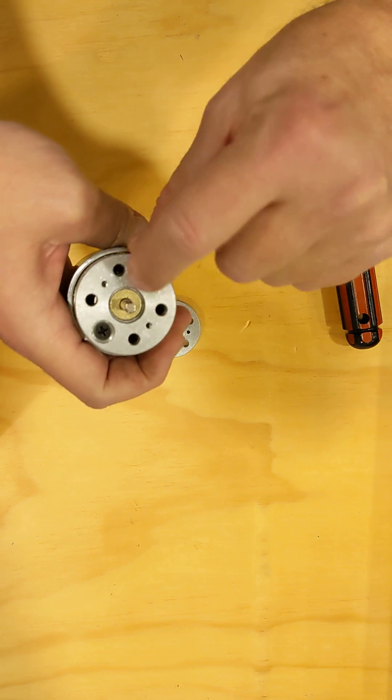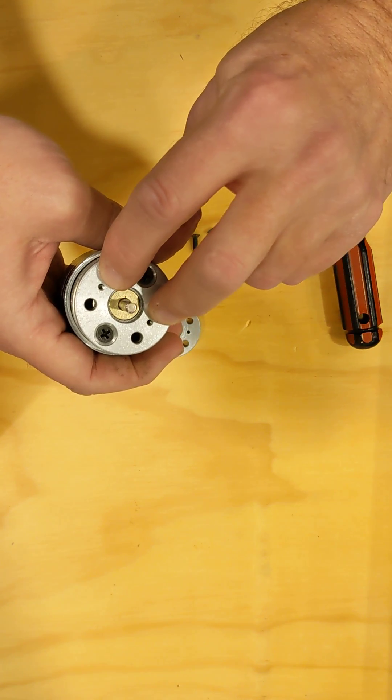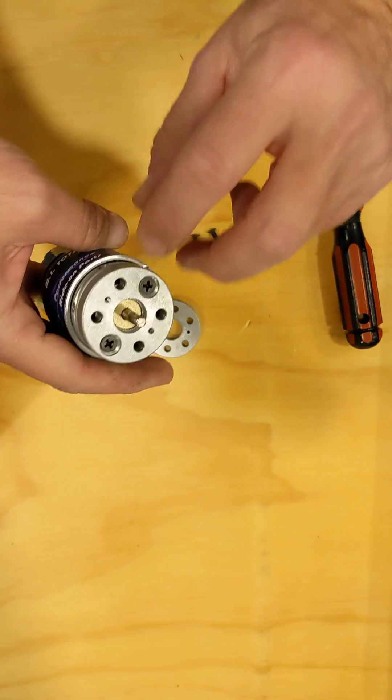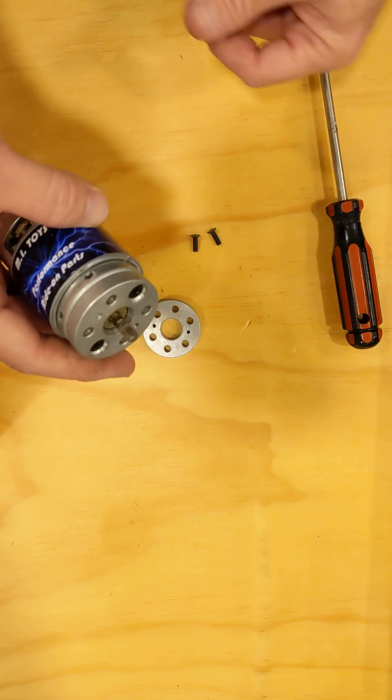You'll see there's two screw holes here. These are tapped exactly to the same place that your 550 motor mount screws were. So those will go right into your gearbox.